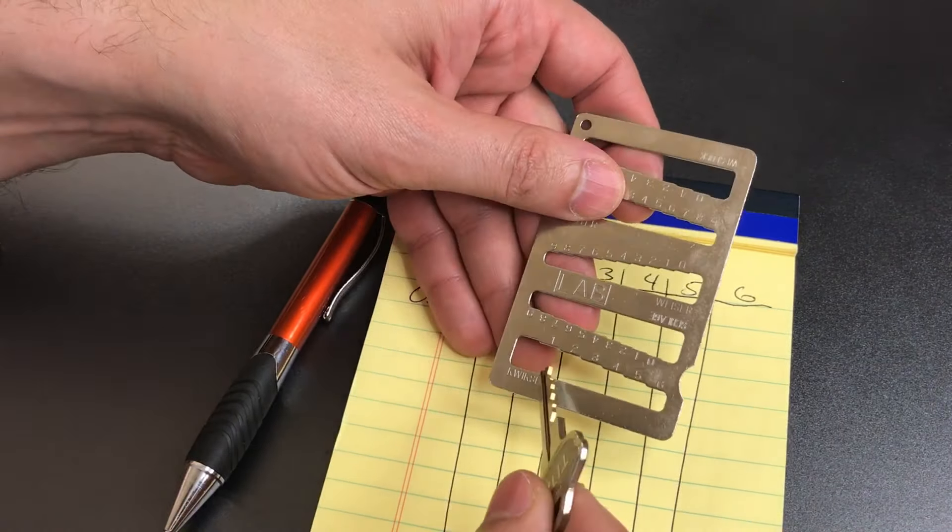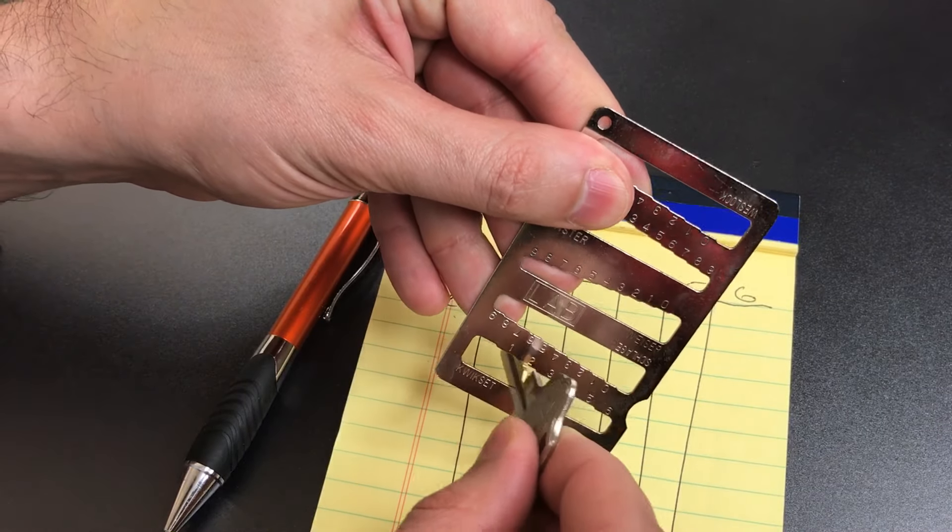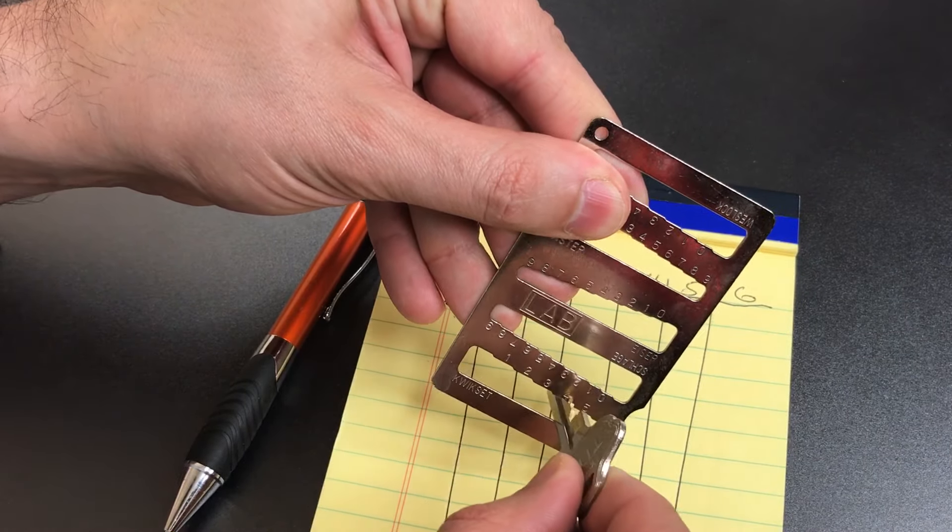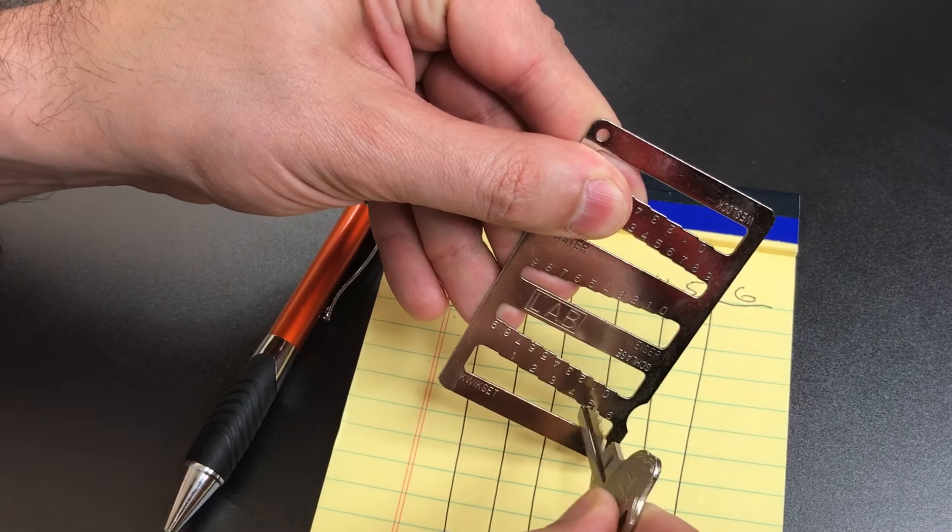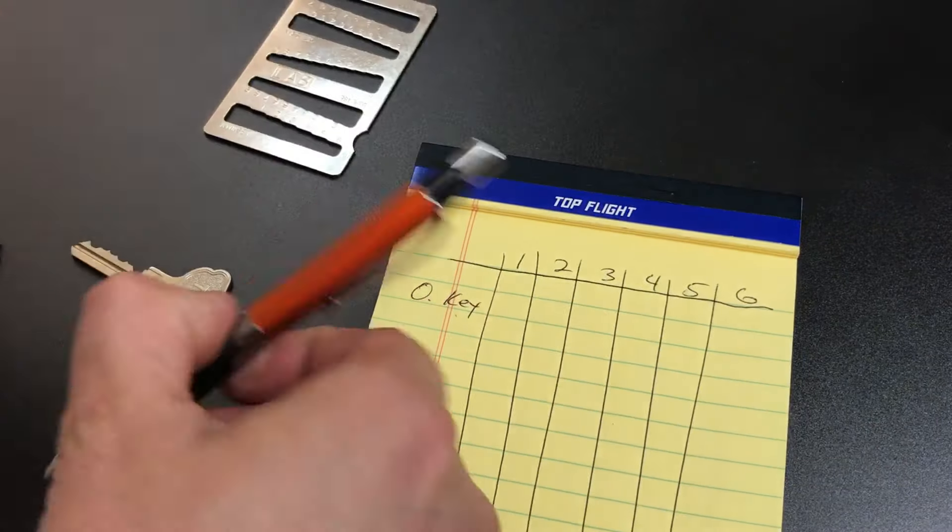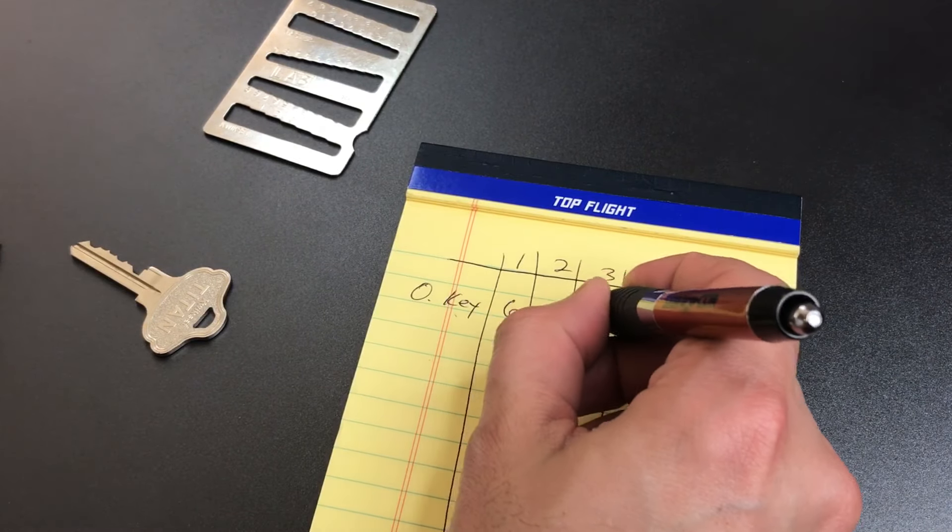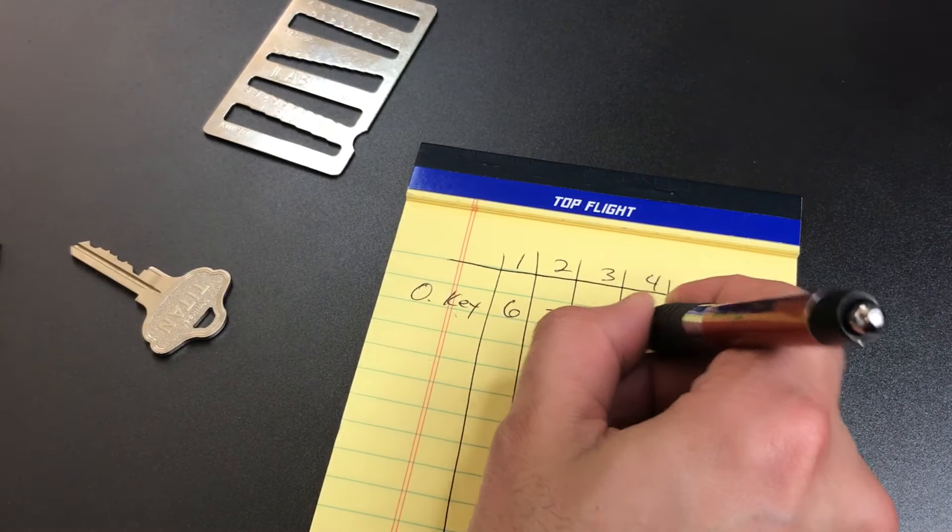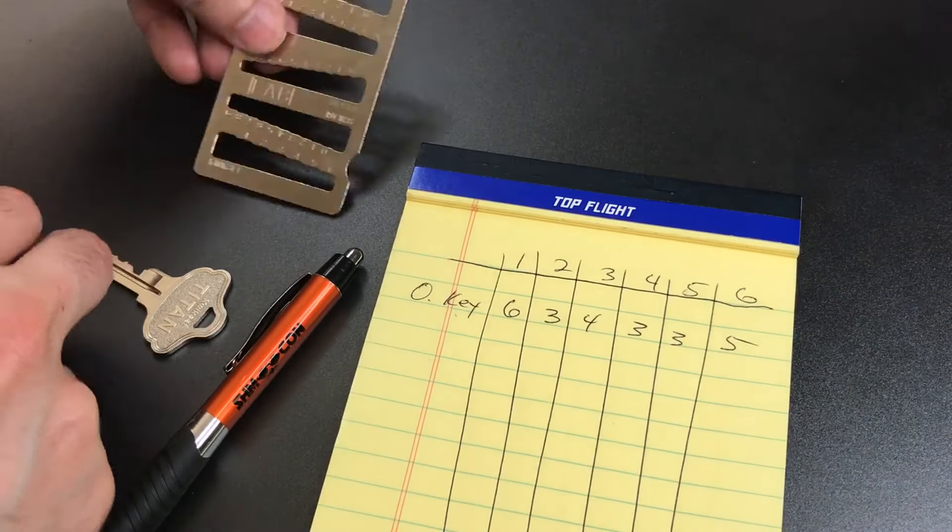Okay, the old key we're measuring on this depth card are six, three, four, three, three, five. Okay, so if I remember that right, six, three, four, three, three, five.